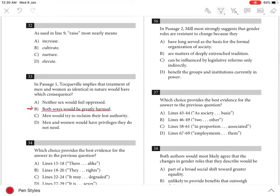Choice A is incorrect because Tocqueville says treating men and women as identical in nature would result in the degradation of both genders, a condition closer to oppression rather than freedom from it.